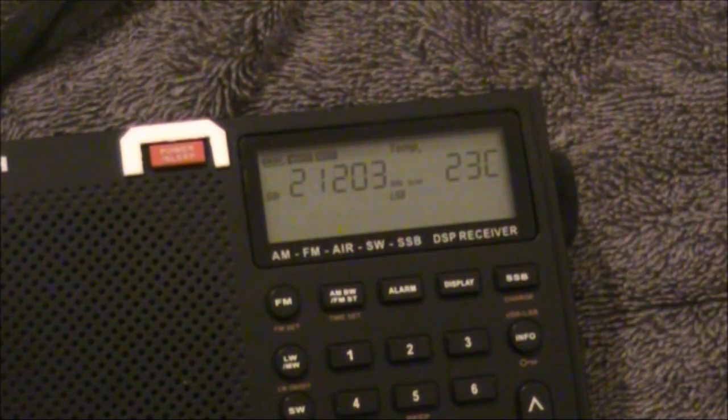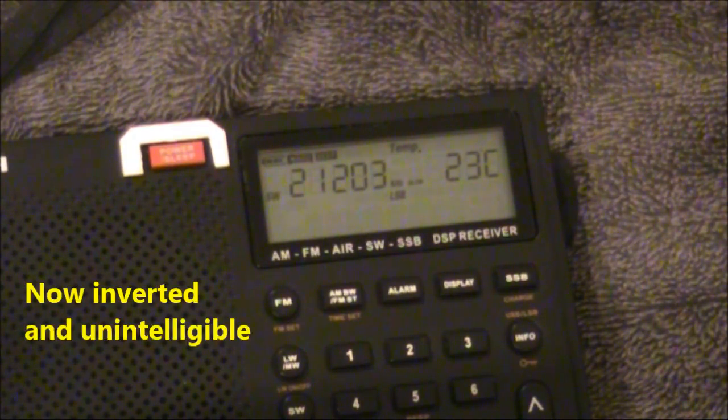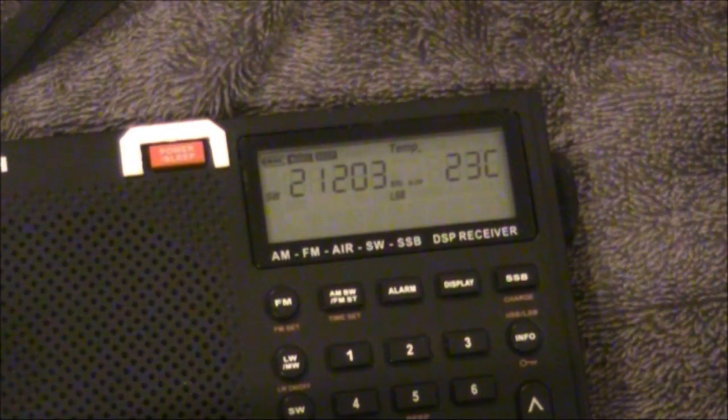Another thing that's interesting, is there's actually two points on the direct conversion receiver's tuning range, where you can get good audio. That's 3kHz below, and 3kHz above your centre frequency. This is below. Then I'm tuning through the centre frequency. And this is above.